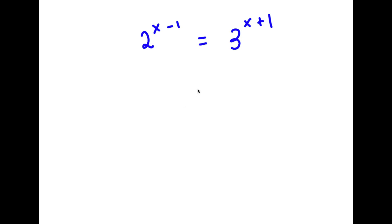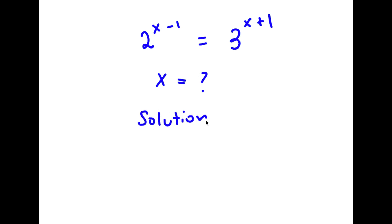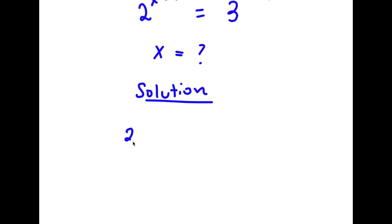So in this problem, I have 2 to the power of x minus 1 is equal to 3 to the power of x plus 1. So I want to find the value of x here. For my solution, I first start with 2 to the power of x minus 1 is equal to 3 to the power of x plus 1.